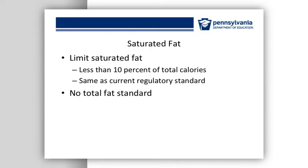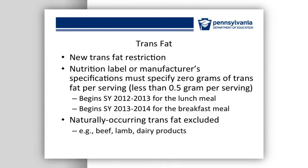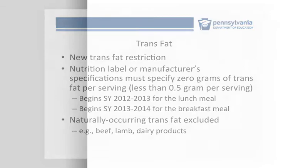However, you should be cautious in using too much fat because doing so may cause you to exceed the calorie limits. There is a new restriction for trans fat. Every product or ingredient used in the school lunch program must say 0 grams trans fat per serving on the label or manufacturer's specification. Labeling regulations allow for an item to say 0 grams of trans fat on the label if it contains less than 0.5 grams of trans fat per serving. There is some naturally occurring trans fat in beef, lamb, and dairy products, but this trans fat is excluded from the trans fat limits. If you have a mixed product such as a taco or a burrito that might have both naturally occurring and added trans fat, you will need to contact the manufacturer to determine how much of the trans fat is added.